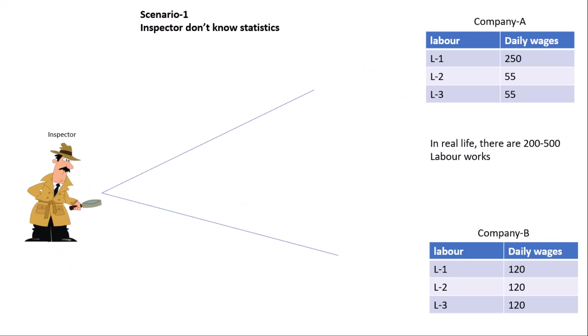Here is the data of the average. The average of Company A is 120, and the average of Company B is also 120. Suppose he does not know statistics. What happens in this scenario? He can't recognize the fraud company which does not follow the Wages Act.